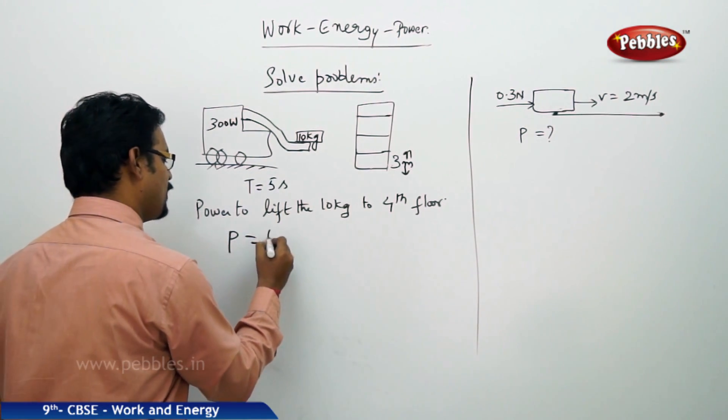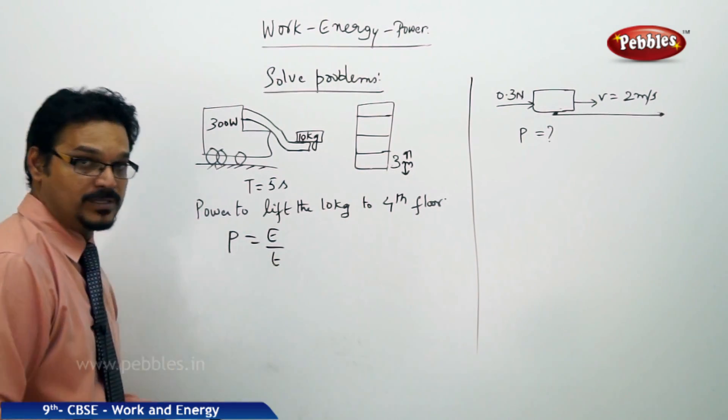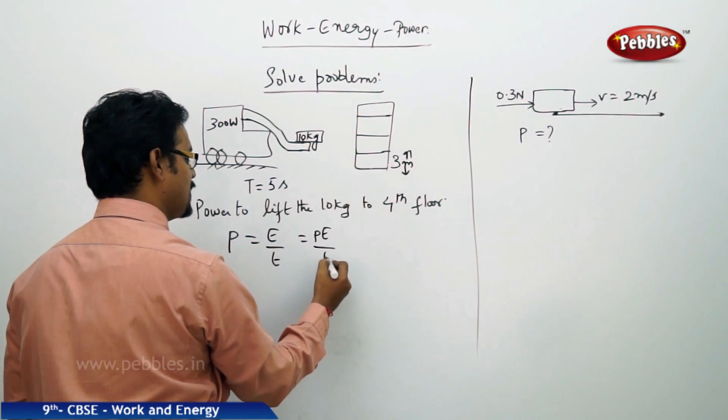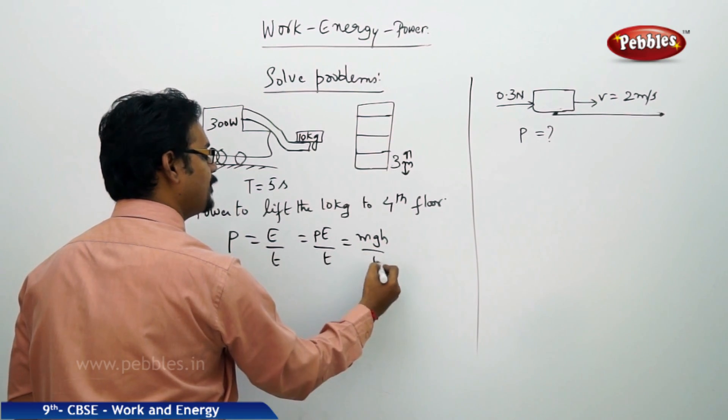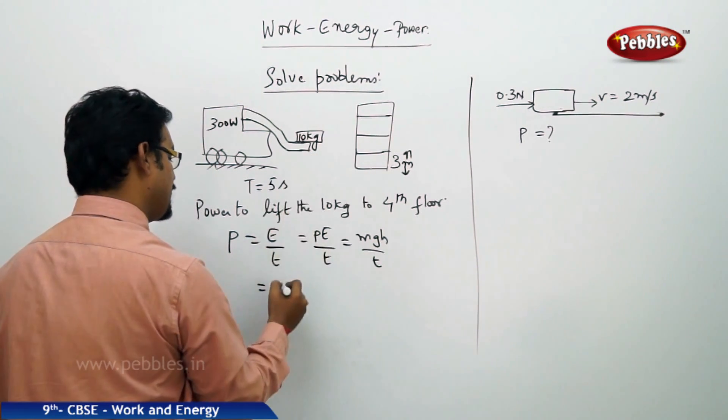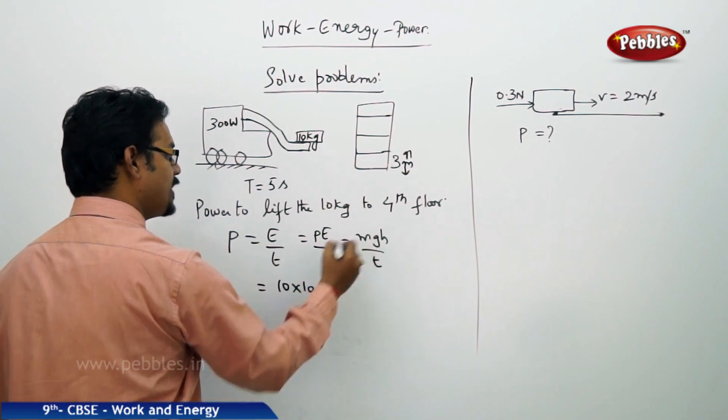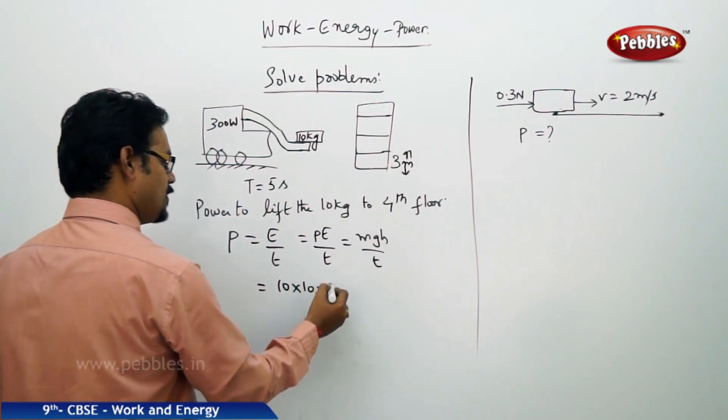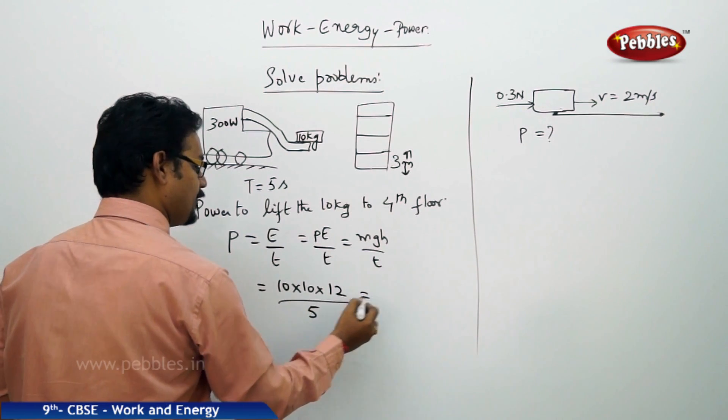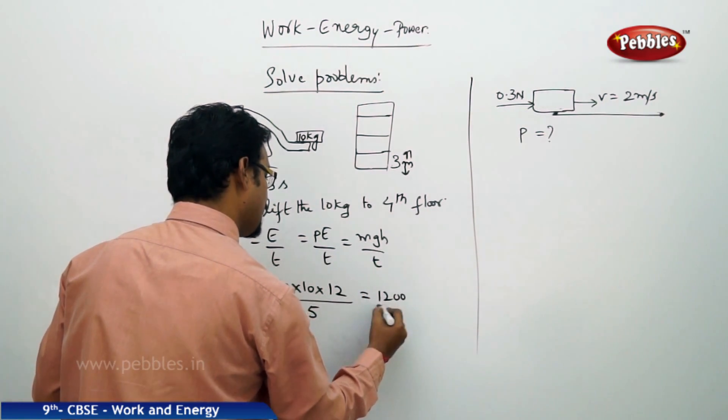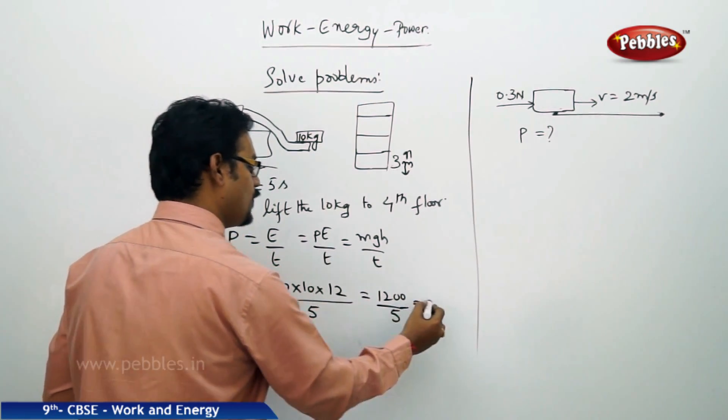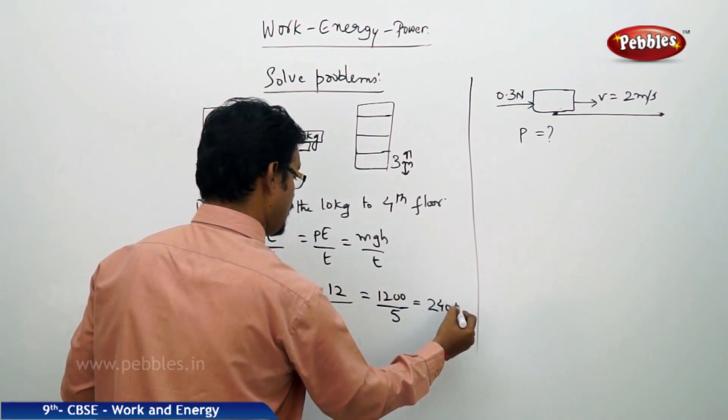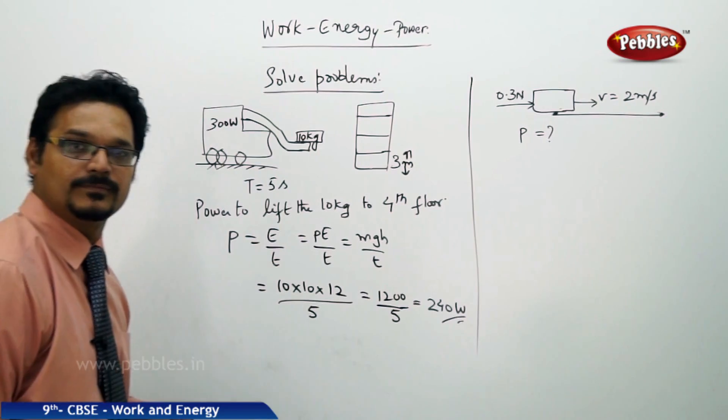The question is what is the power to lift the 10 kg to the 4th floor? Whenever we say power, you know power equals energy by time or work by time. When the body is lifting up against gravity, the energy is potential energy by time, so P = mgh/t. The mass is 10 kg, g is 10, height is 4 floors, one floor is 3 meters so 4 floors is 12 meters, divided by time is 5. This is 1200 divided by 5, so 240 watts is the power.